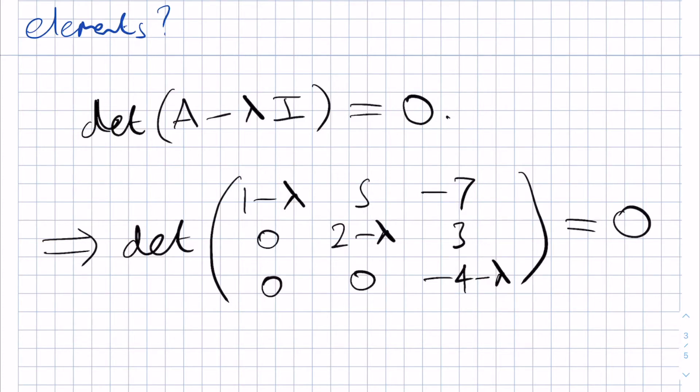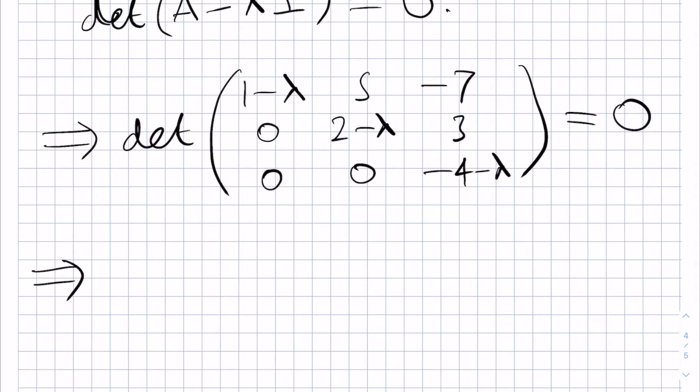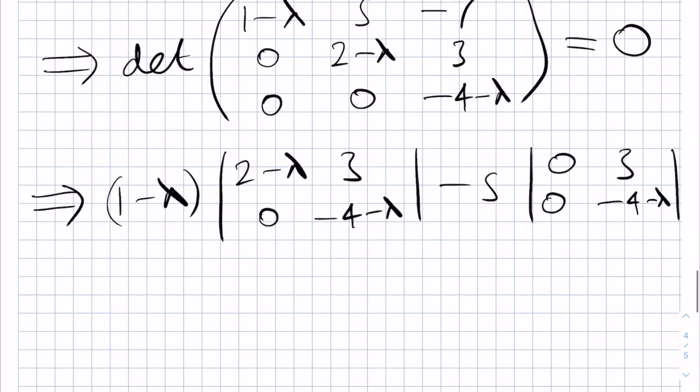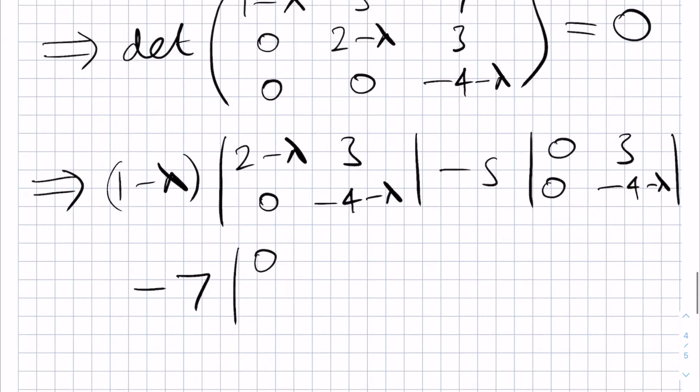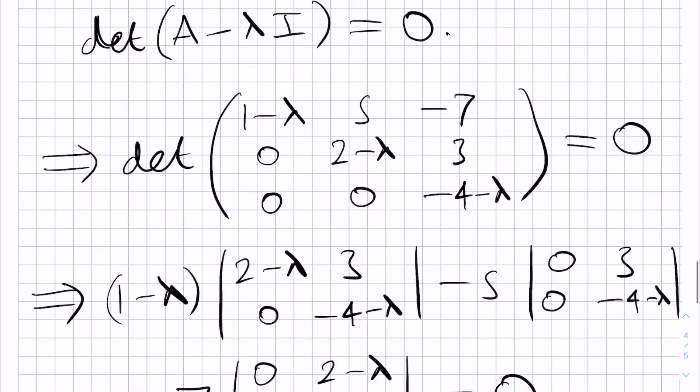By expanding out this determinant we will get 1 minus lambda times the determinant of 2 minus lambda, 3, 0, minus 4 minus lambda and then minus 5 with 0, 3, 0, minus 4 minus lambda, and then minus 7 with 0, 2 minus lambda, 0, 0. And this result must be equal to 0 from the above equation.